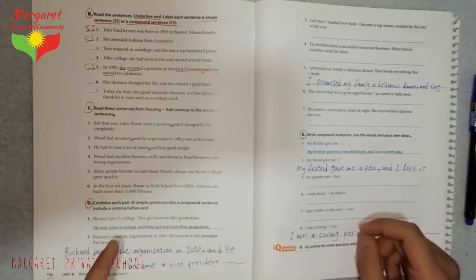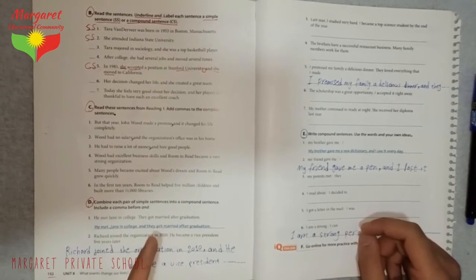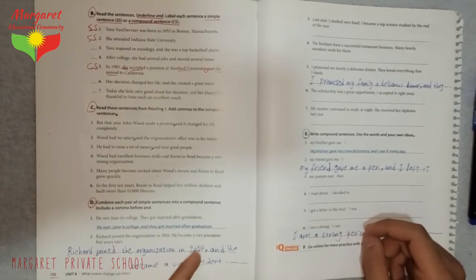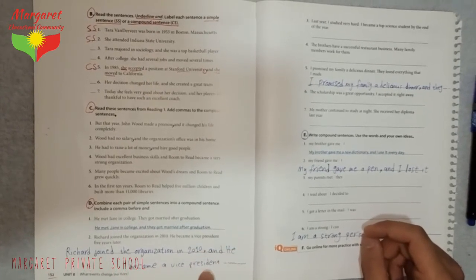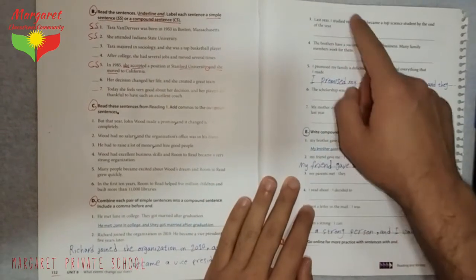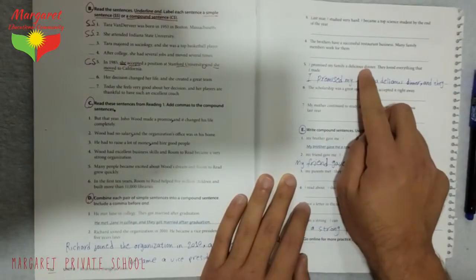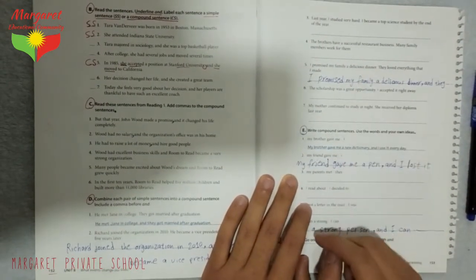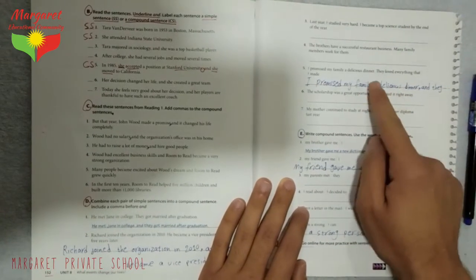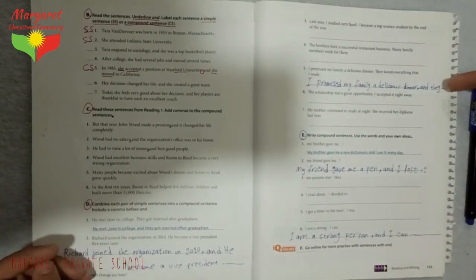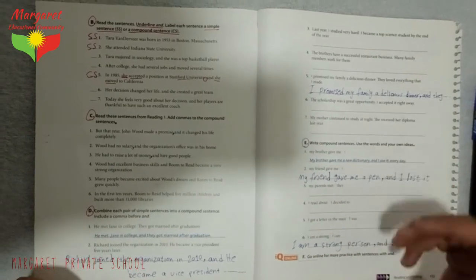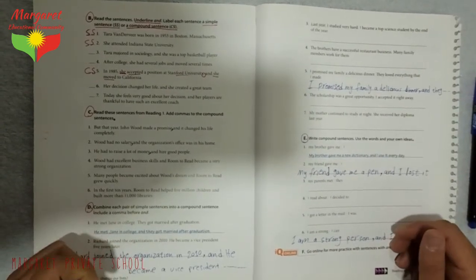Number one is done. Look at number two. Richard joined the organization. This is one sentence. So, you should say, Richard joined the organization in 2010, comma, and he became a vice president five years later. Look at number five. I promised my family a delicious dinner, comma, and they loved everything that I made.